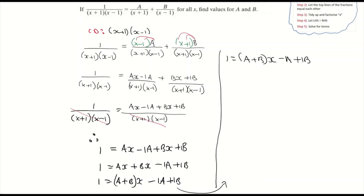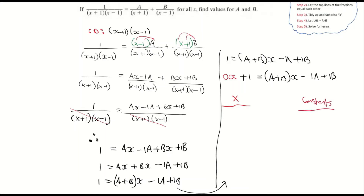Rewriting the left hand side, that's the same as bringing in 0x. I don't have any x's on the left, but I'm bringing it in so I can match it up with the x's on the right. So 0x plus 1 equals (a plus b)x minus 1a plus 1b. Looking at the x terms: 0x equals (a plus b)x, so dividing across by x gives 0 equals a plus b, therefore a equals minus b.